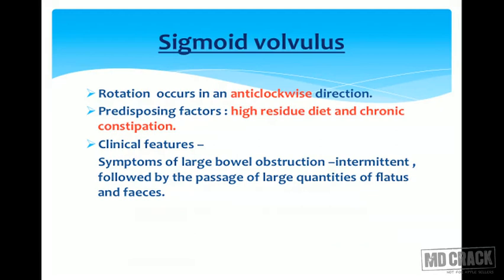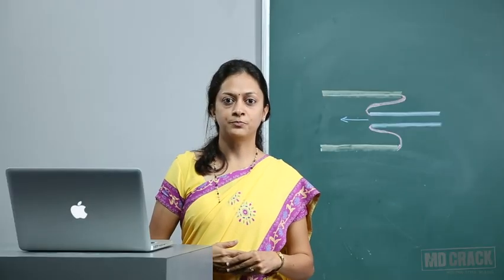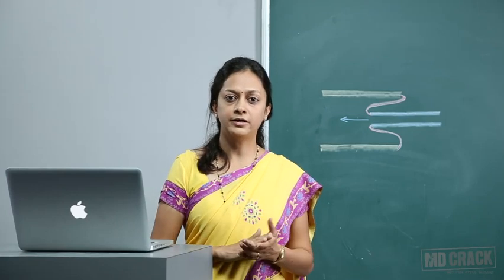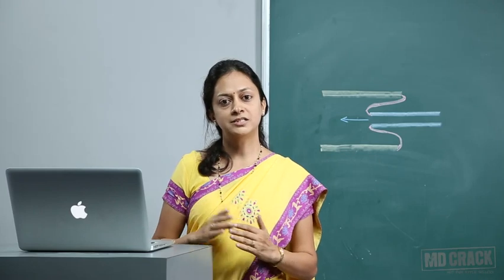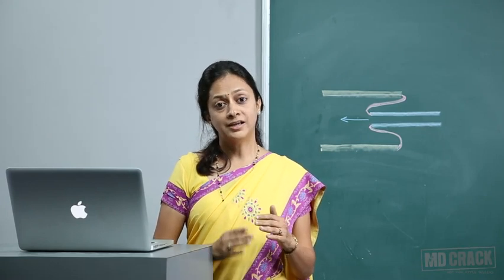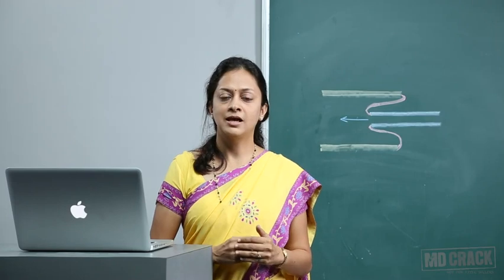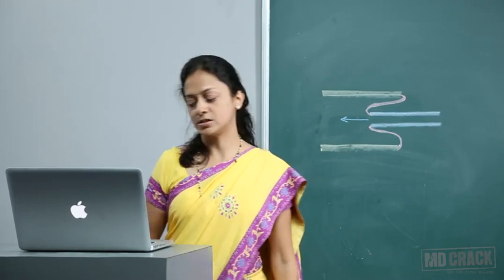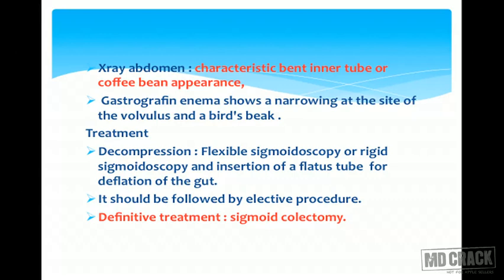Sigmoid volvulus is common. Rotation occurs in the anti-clockwise direction. Predisposing factors are high residue diet and chronic constipation. The clinical symptoms are the same as large bowel obstruction, but are intermittent — sometimes the volvulus self-derotates and the patient passes large amounts of flatus and feces and becomes normal, then develops the same symptoms again after some days, indicating volvulus.